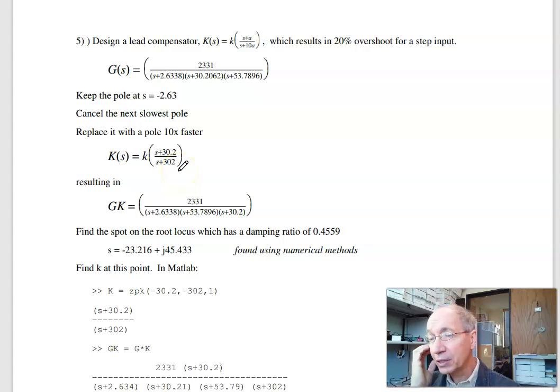Finally, problem 5 is suppose I want to speed up the system. Design a lead compensator in the form of s plus a over s plus 10a. Basically cancel a pole, stick it 10 times further out. So I'm going to keep the pole at minus 2.6. I need that to reduce the steady state error. This is the one that I cancel. Pick a to cancel the point minus 30, put it at 300. Gives me my new system. I pull it 30, became 300, 302.